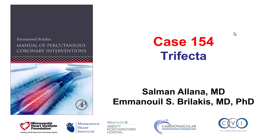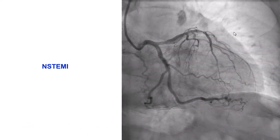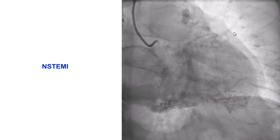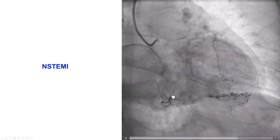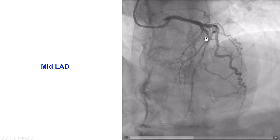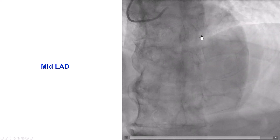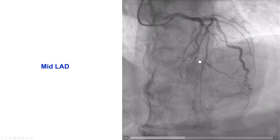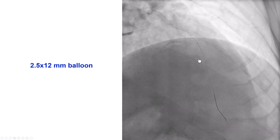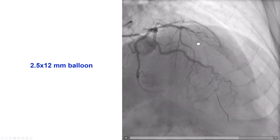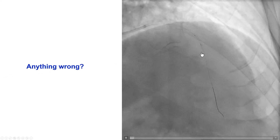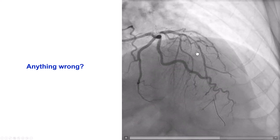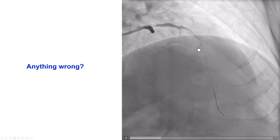This is a case of three complications happening during the same procedure. The patient presented with non-ST elevation myocardial infarction. Diagnostic angiography shows no significant disease in the circumflex; however, he did have a significant lesion in the mid-LAD. There was no significant disease in the right coronary artery, and therefore the plan was to perform a PCI of the LAD, which was predilated with a 2.5 by 12 mm balloon. This is how the lesion looks afterwards, which has some significant improvement.